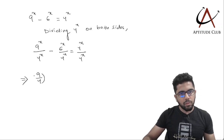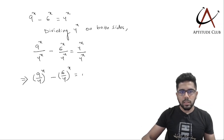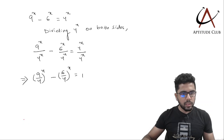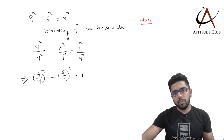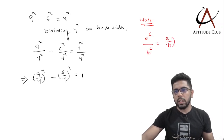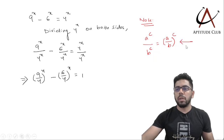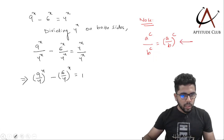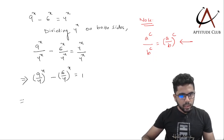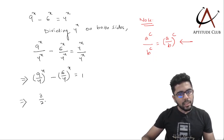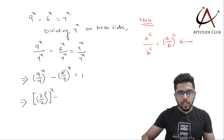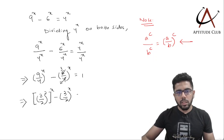Now I can write this as (9/4) to the power x, minus (6/4) to the power x, equals 1. This uses the property that a^c divided by b^c equals (a/b)^c when the exponents are the same. Then (9/4) can be written as (3/2) squared, whole to the power x, and (6/4) simplifies to (3/2) to the power x. So this equals 1.